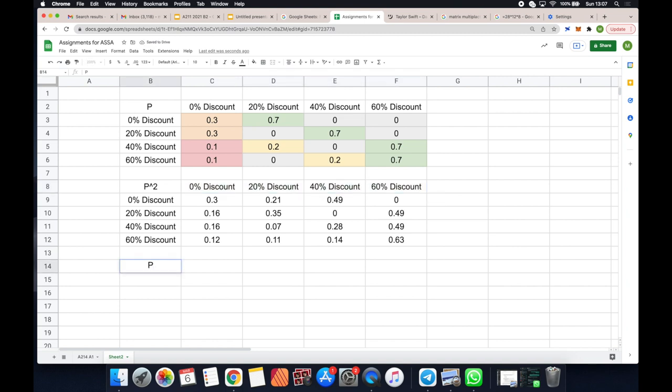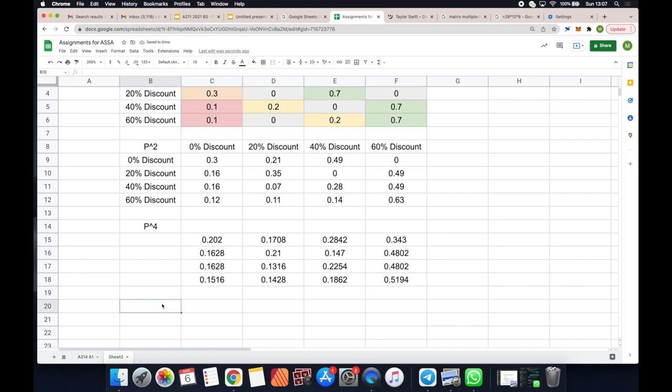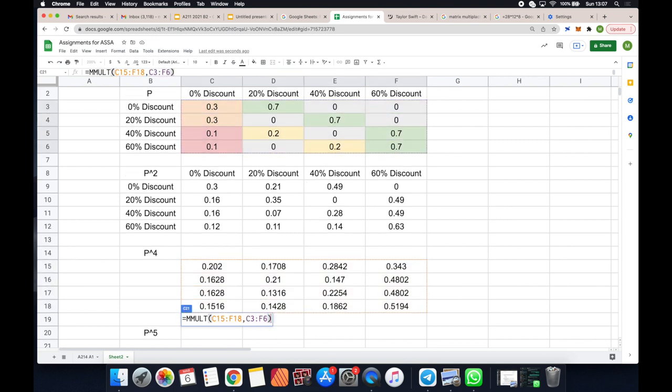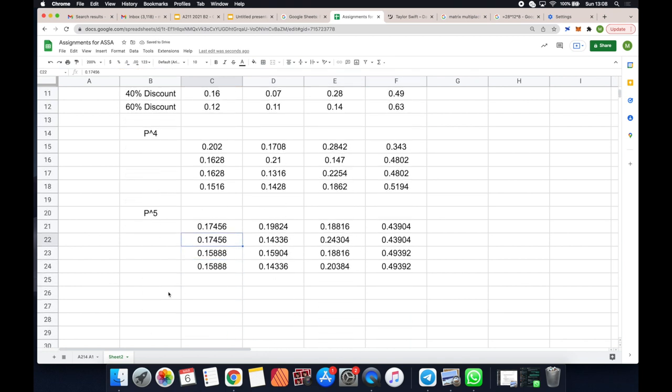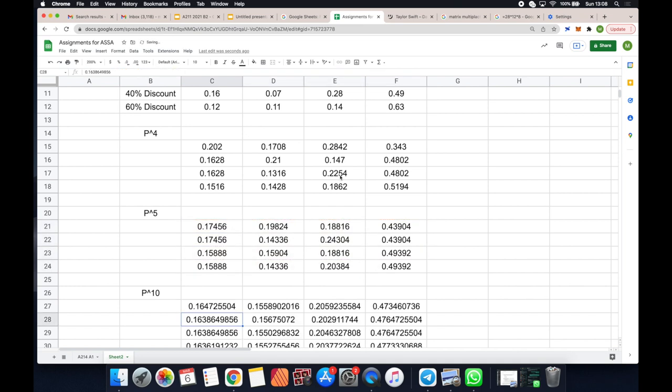So if I wanted to get P4, essentially what we're going to be doing here is MMULT, and it's going to be number two, and number two again. And that's going to give us now our P4, which means if we want P5, which we needed for the one question, essentially what we need to do, again, is MMULT, we have four, and now we just need to add one. So we're going to go to this top one over here, and we're going to have P5.